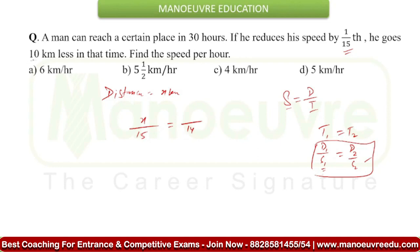And you are covering the distance 10 km less. That means the new distance will be x minus 10. You can solve this equation to get the value of x. After solving, you get 15x minus 150 is equal to 14x, or you can say x is equal to 150.